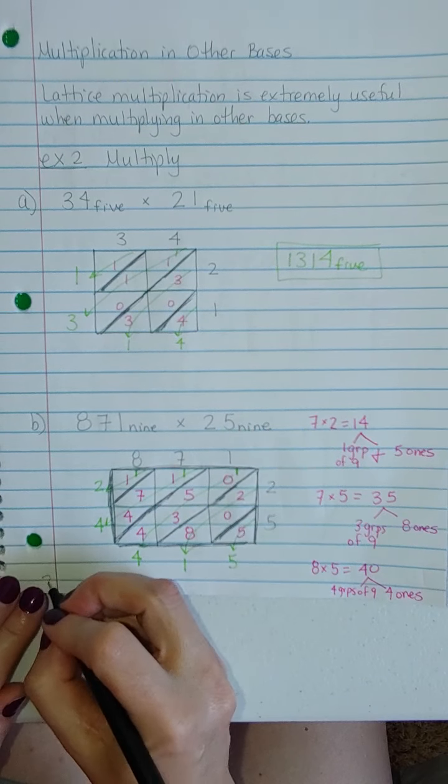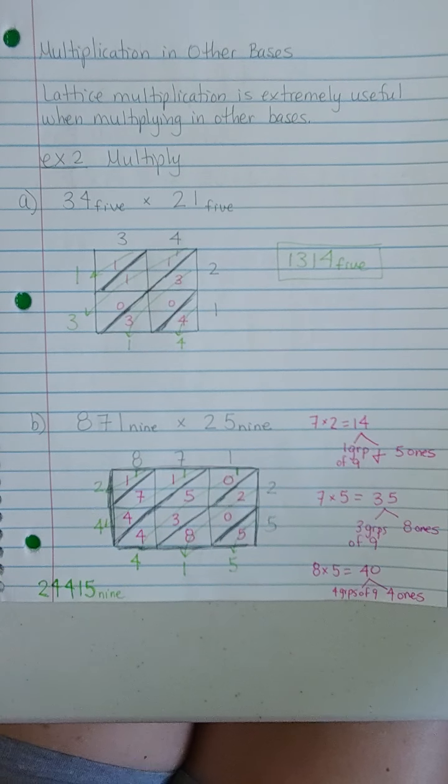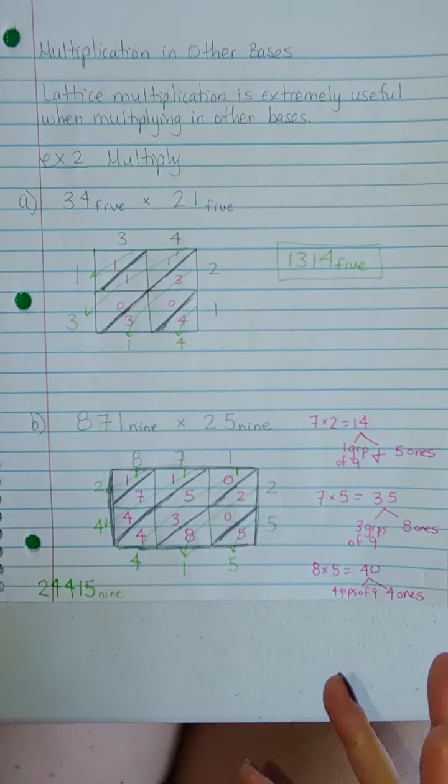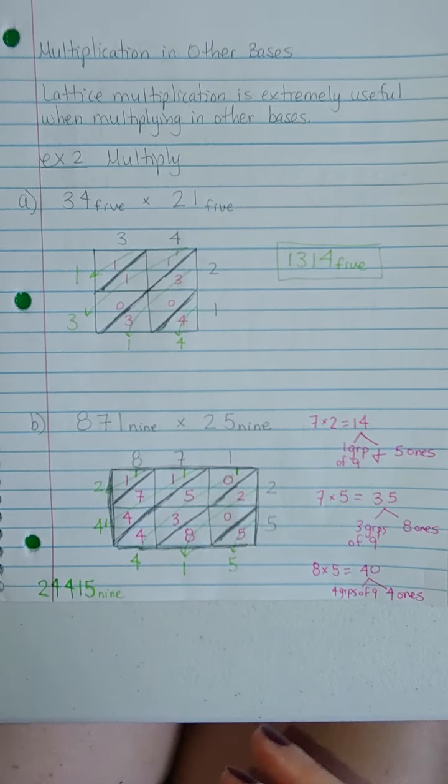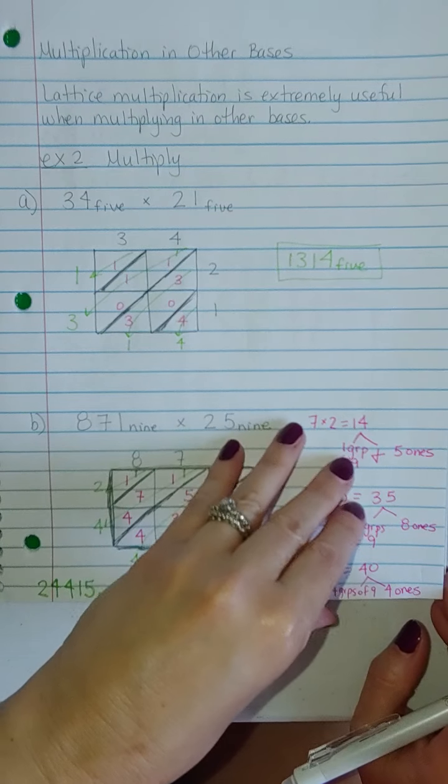I hope you guys can tell if those are 4s. So 2, 4, 4, 1, 5, base 9. Base 9 is tricky because it's so close to 10 that these answers look like they're close but wrong. Like you're like 7 times 2 is 14. Why'd she put 15? Is she on drugs or something? No. Nope. Not at all. It's all about the base 9.